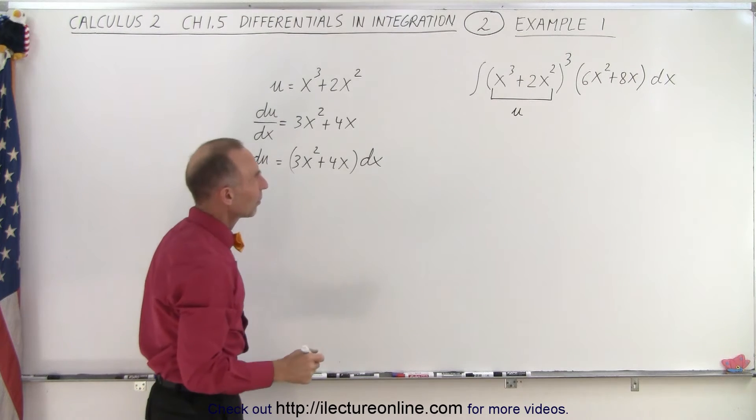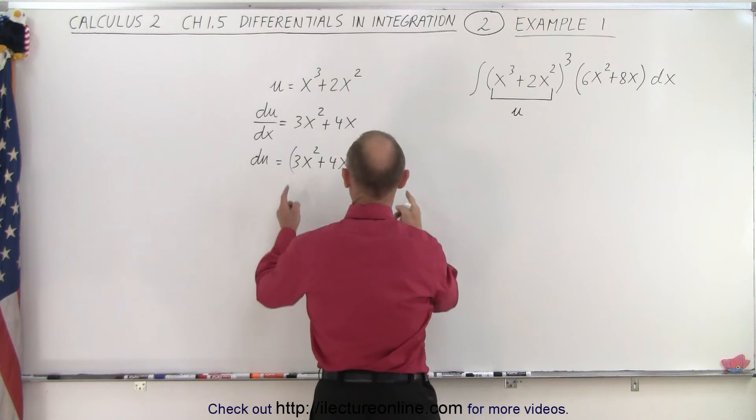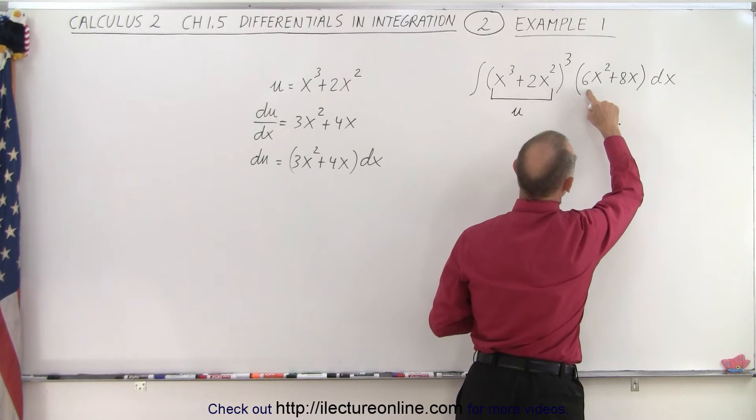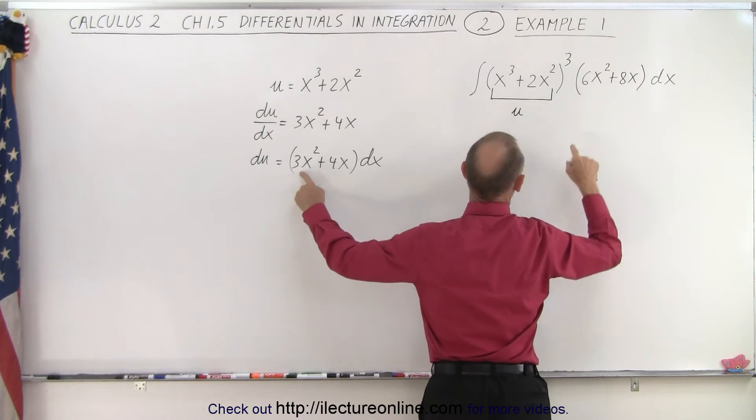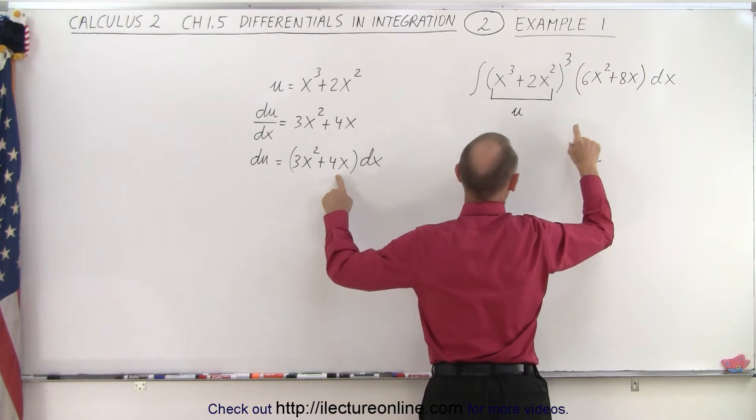And then I look over here and I say, well what do I have? Well instead of having this, I have that. It looks like it's twice as much. Instead of 3x² I have 6x², instead of 4x I have 8x.